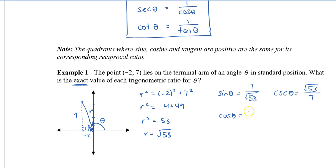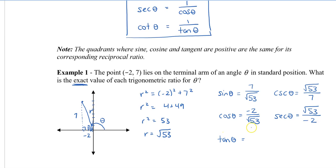Cos theta is adjacent divided by hypotenuse: -2 over root 53. Its reciprocal, secant theta, is root 53 over -2. Tan theta is opposite divided by adjacent: -7 over 2, or equivalently negative 7 over 2. Its reciprocal, cotangent theta, is negative 2 over 7.